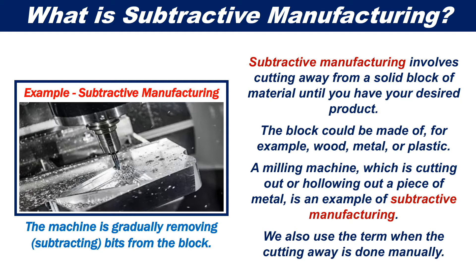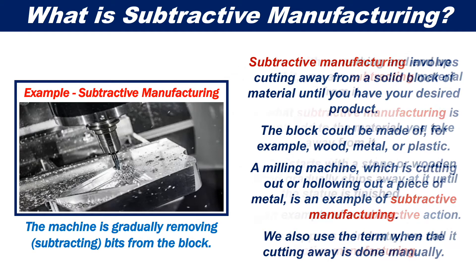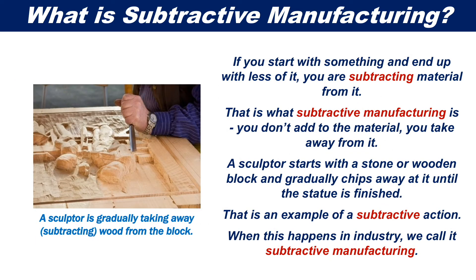We also use the term when the cutting away is done manually. If you start with something and end up with less of it, you are subtracting material from it. This is what subtractive manufacturing is — you don't add to the material, you take away from it.